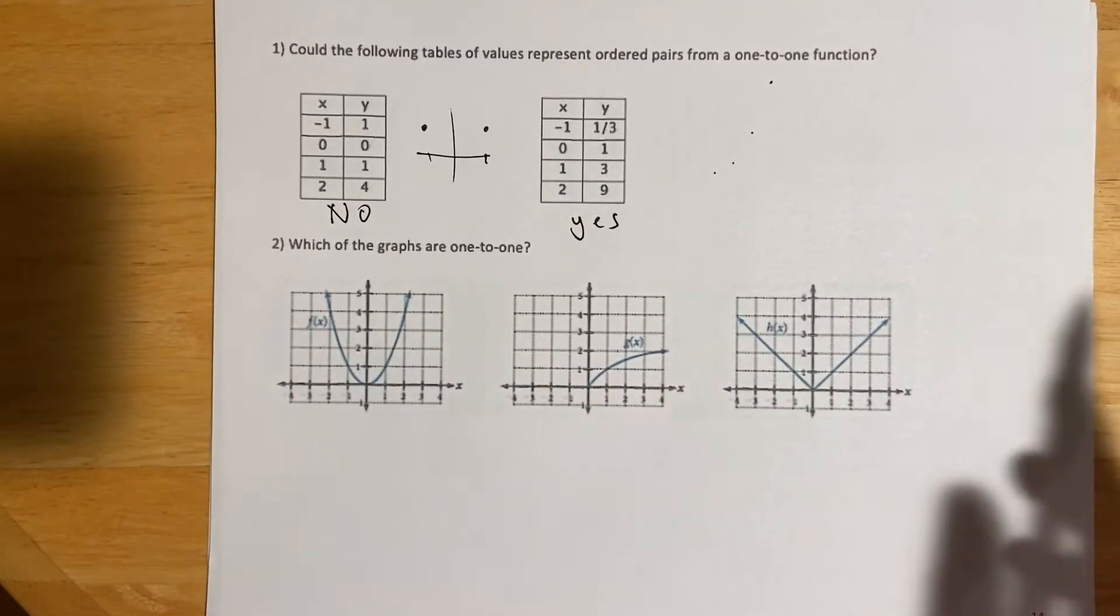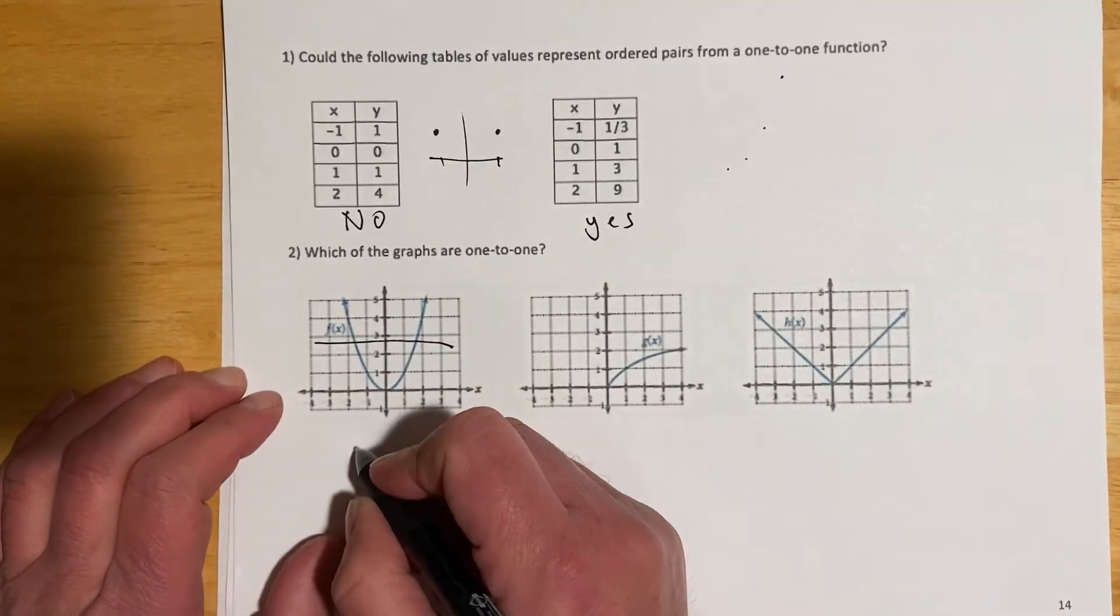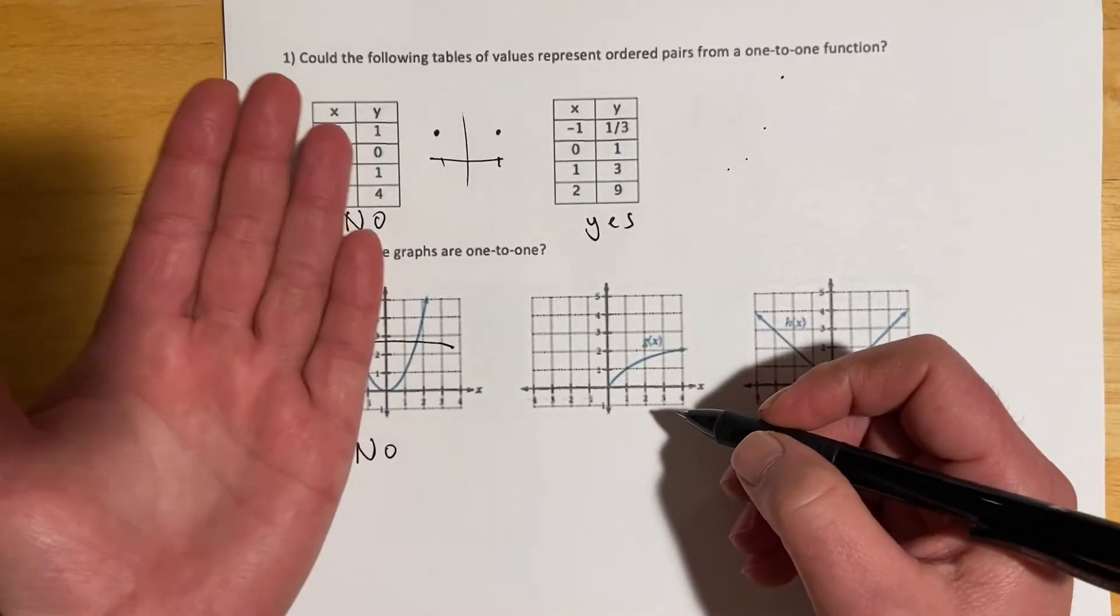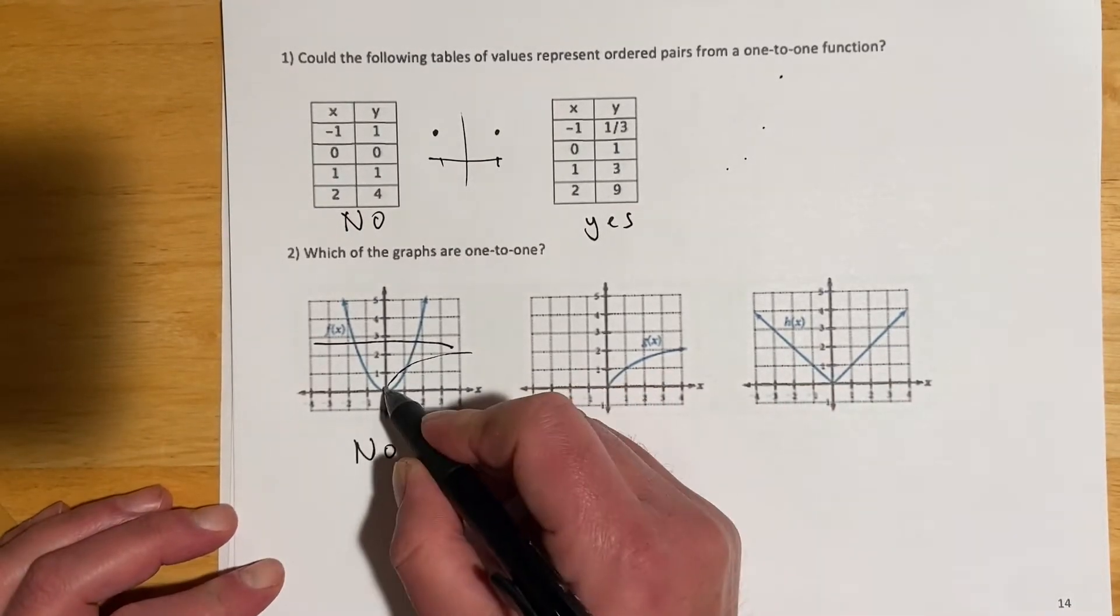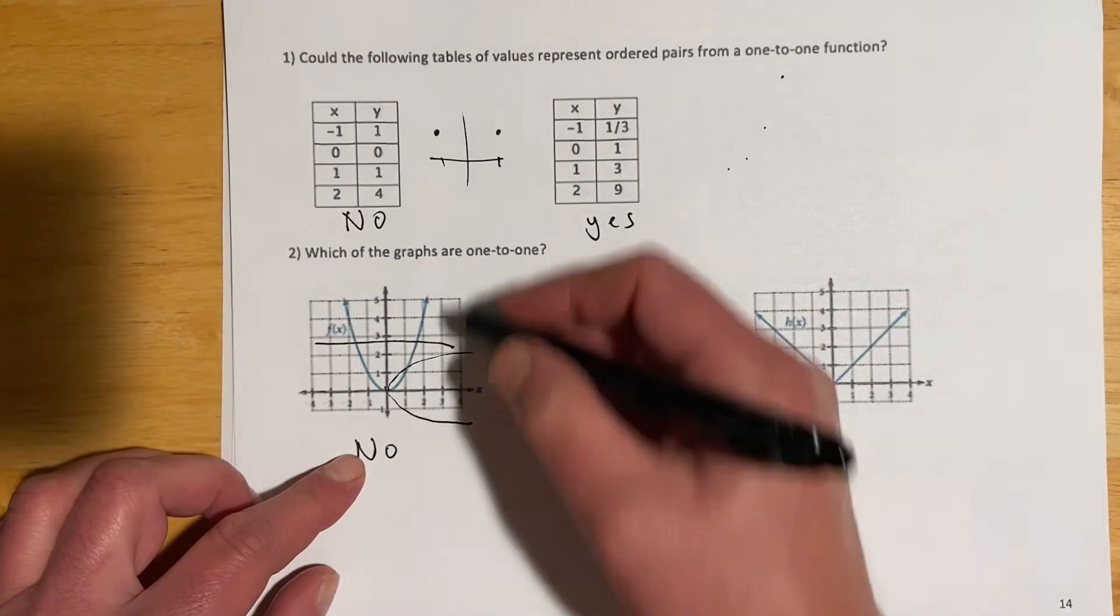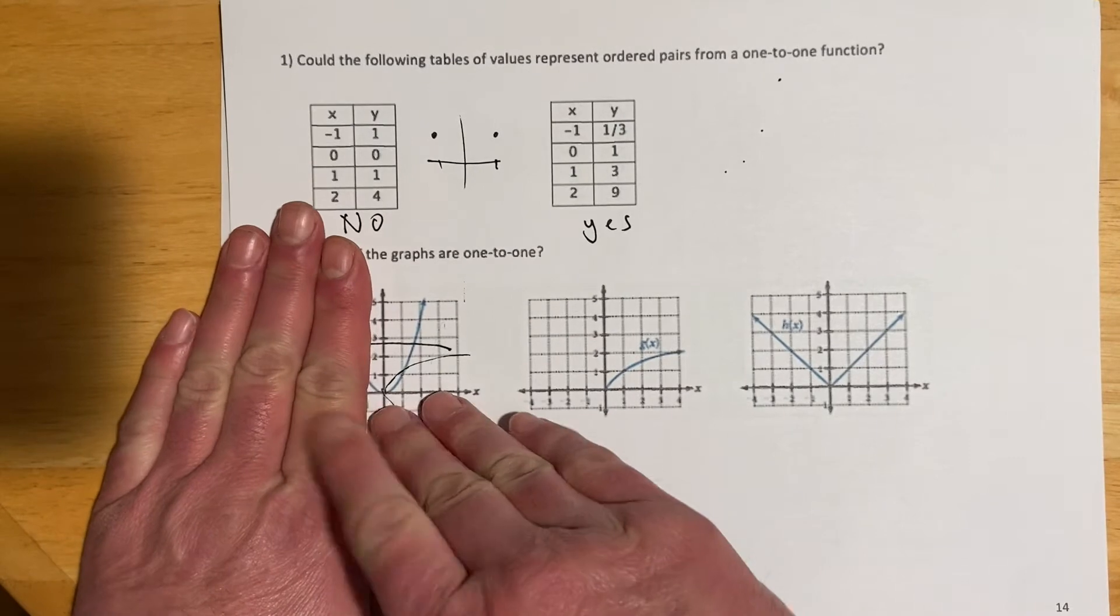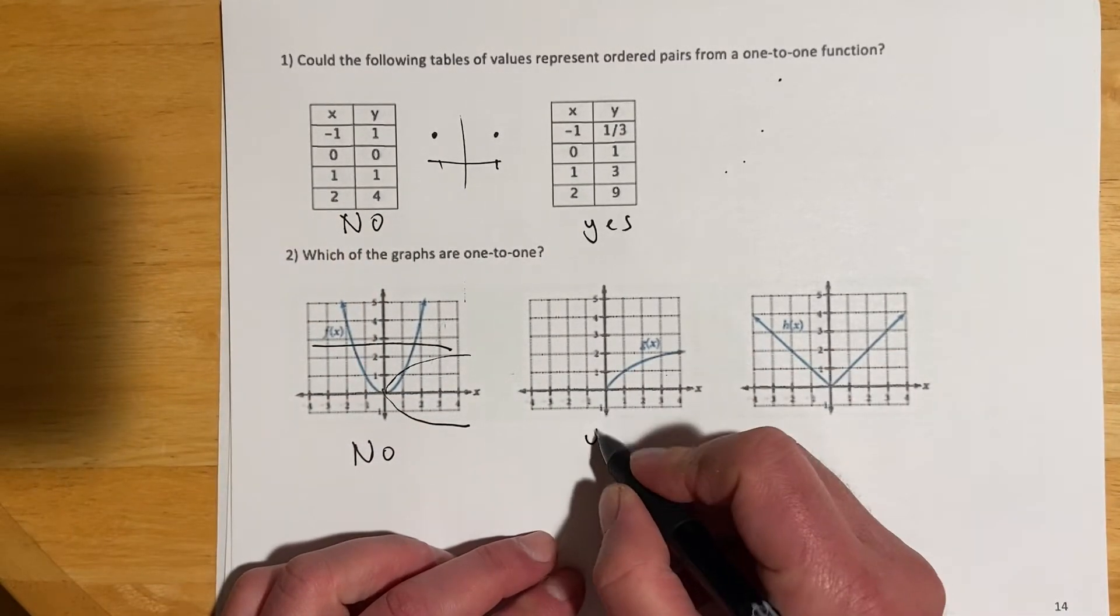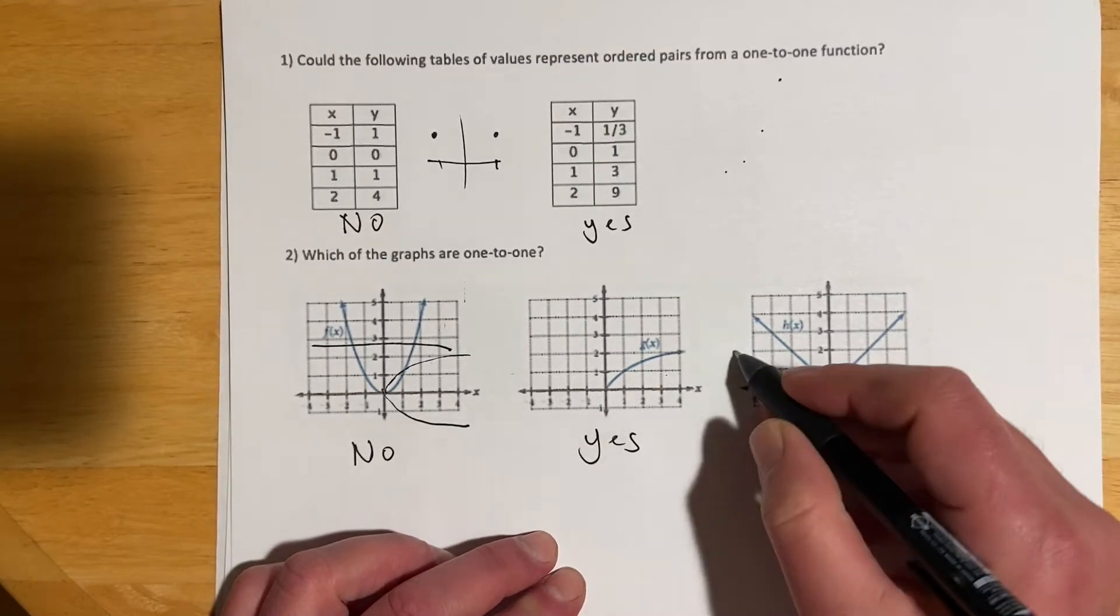Graphs are really easy because you just have to think horizontal line test. So parabola fails, that's a no because I hit it twice. The reason is when we see what the inverse is, it's going to have that graph kind of reflected this way, and so then its inverse ends up failing the vertical line test, not being a function. This one passes the horizontal line test, we'd say yes. Absolute value, nope, it does not pass.